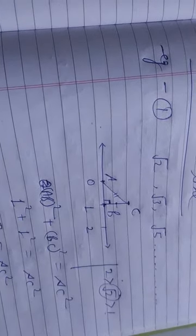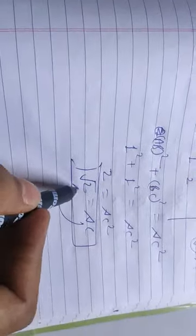And this is 1, this is again 1, and AC square is 2. So AC is root 2. That means the distance AC is root 2.